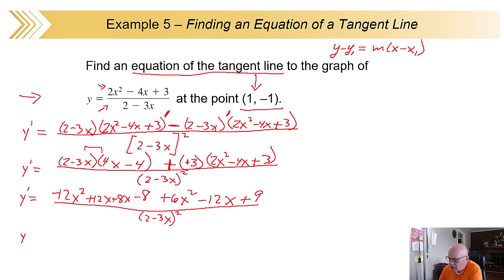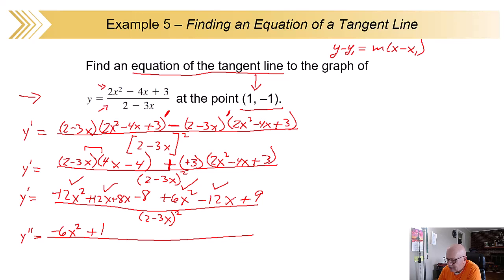One more clean-up on the top. We've got a pair of x-squared terms: minus 12x squared plus 6x squared gives minus 6x squared. Then 12x minus 12x is 0 — scratch those off. And minus 8 plus 9 is plus 1. There's your numerator. And in the denominator, 2 minus 3x squared. So our derivative is minus 6x squared plus 1 over (2 minus 3x) quantity squared.